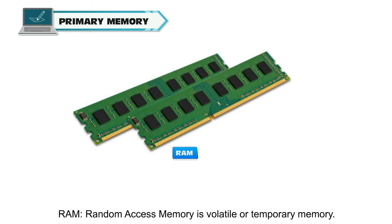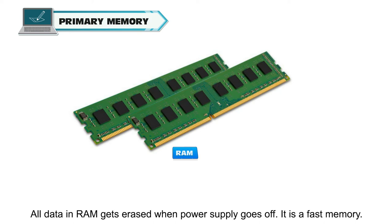RAM, or random access memory, is volatile or temporary memory. All data in RAM gets erased when the power supply goes off. It is a fast memory.